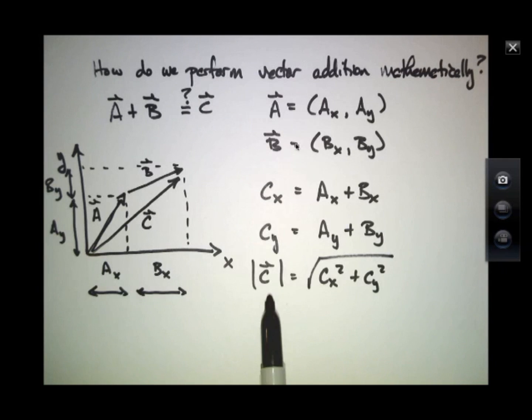And the length of C, in other words, the absolute value of C with the arrow on it, is equal to the square root of CX squared plus CY squared.